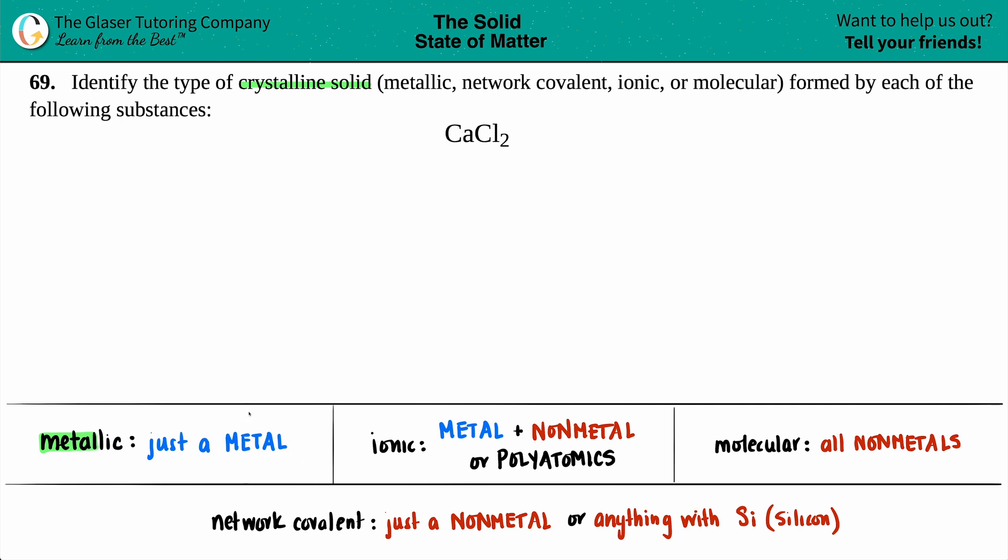In CaCl2, I do have calcium, and we know on the periodic table calcium is in group two, so it's a metal. But then I see that I have Cl, which is chlorine, and chlorine is in group 7A or 17 depending on what your periodic table says, but it's a non-metal.